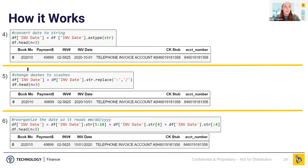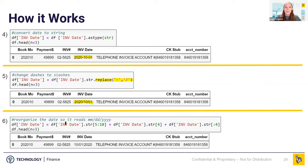Next, I changed the date based on the business requirements the analyst wanted. We changed the date to a string so that we could play with it, then changed the dashes to slashes. So here you see 2020/10/01. And then we reorganized it — the analyst wanted it in month/date/year format. So that's all this is doing: reorganizing it to 10/01/2020.